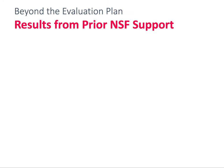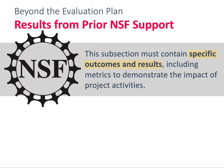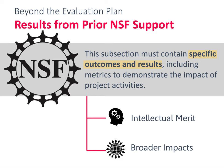If the PI or co-PI on the proposal has received prior funding from NSF related to the current proposal within the past five years, the ATE project description must begin with a section called Results from Prior NSF Support. If that applies to you, this is where you should describe your previous project's outcomes. Reviewers are going to be looking for evidence of the quality and effectiveness of your prior work that is related to your current proposal. This section has to include the headings of Intellectual Merit and Broader Impacts. Intellectual Merit is about the advancement of knowledge and Broader Impacts is about the benefits to society.